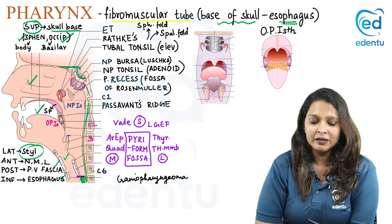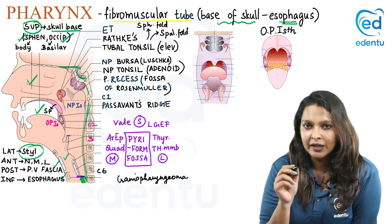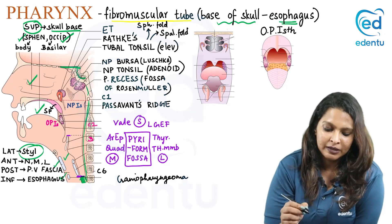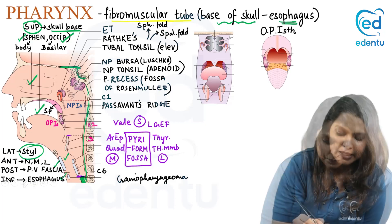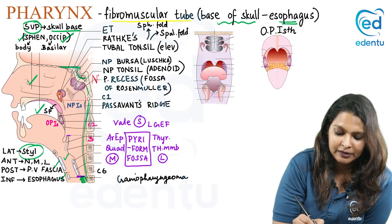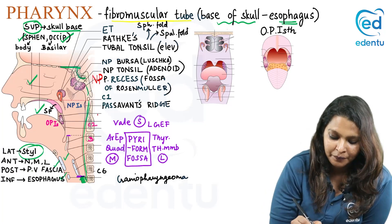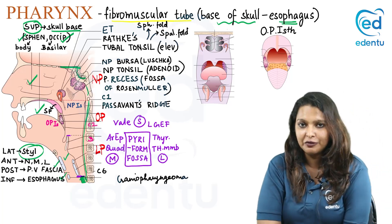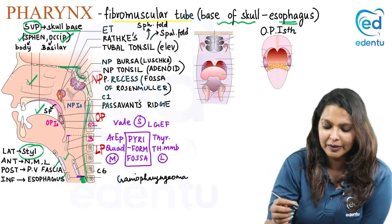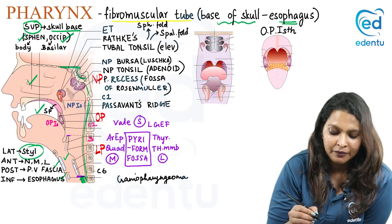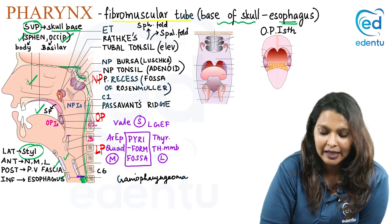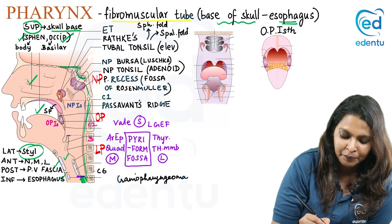The pharynx is divided into three subdivisions: the nasopharynx, the oropharynx, and the laryngopharynx. In the nasopharynx, a lot of MCQs can be asked. We will see what are all the features present in the lateral wall of the nasopharynx.